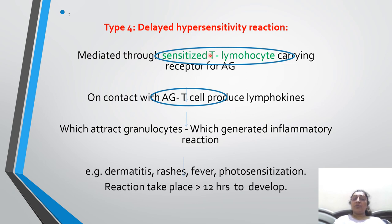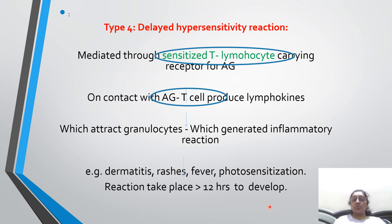Type 4 is the delayed type of hypersensitivity reaction, mediated through sensitized T-lymphocytes carrying receptors for the antigen. On contact with the antigen, T-cells produce lymphokines. The T-cell produces lymphokines which attract granulocytes, generating an inflammatory reaction. Examples include dermatitis, rashes, fever, and photosensitization. The reaction takes place and takes more than 12 hours to develop.